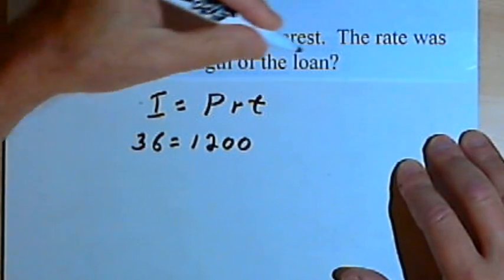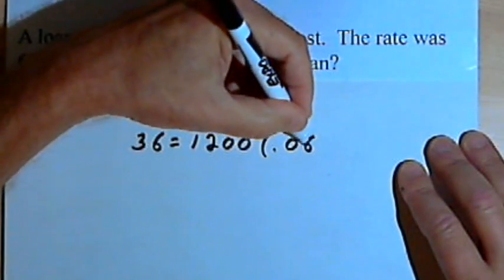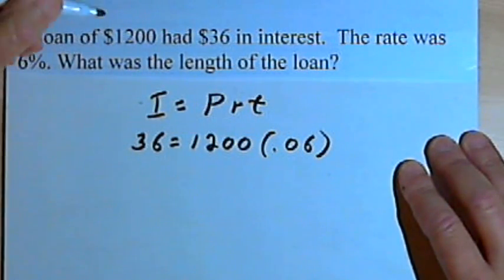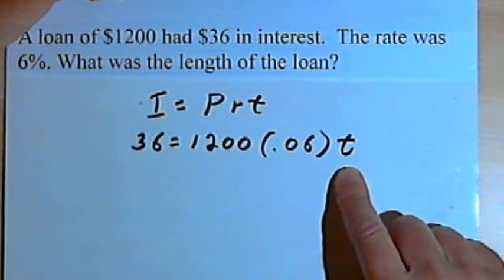times the rate. We've got that also, that's 6 percent. I'll write that as a decimal, 0.06. And that's times the length of the loan, the time, which is what we're looking for.